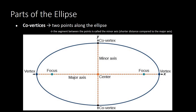Next we have co-vertices. If the vertices are found on the major axis, we find the co-vertices on the minor axis. The minor axis is smaller in length than the major axis. Here, the y-axis is shorter compared to the major axis. Once you locate the minor axis, you can locate the co-vertices — one co-vertex here and the other co-vertex on the opposite side.